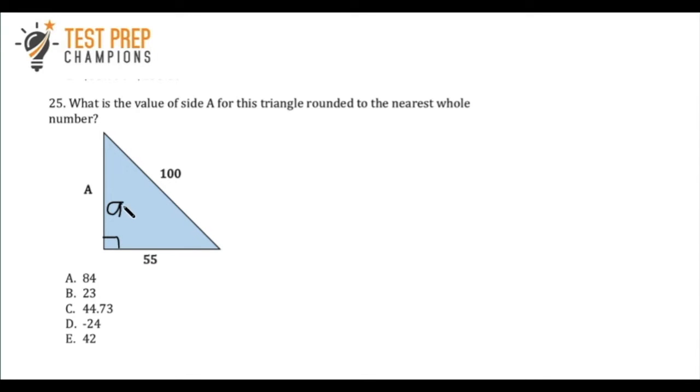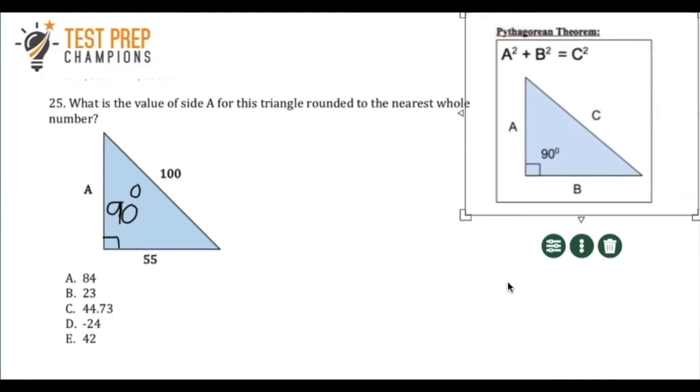So whenever you see that little box type thing, or you just are told that it's a 90 degree angle, you're dealing with a right triangle, and when we have a right triangle, we can apply a special formula called the Pythagorean theorem.